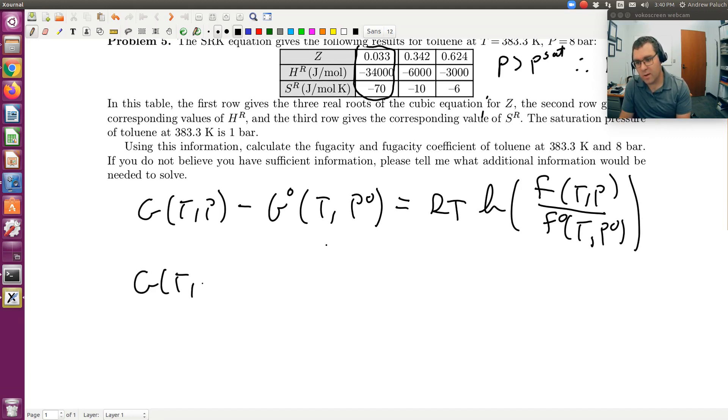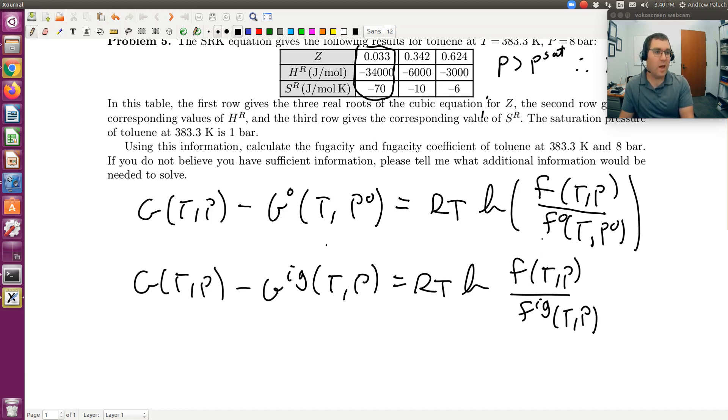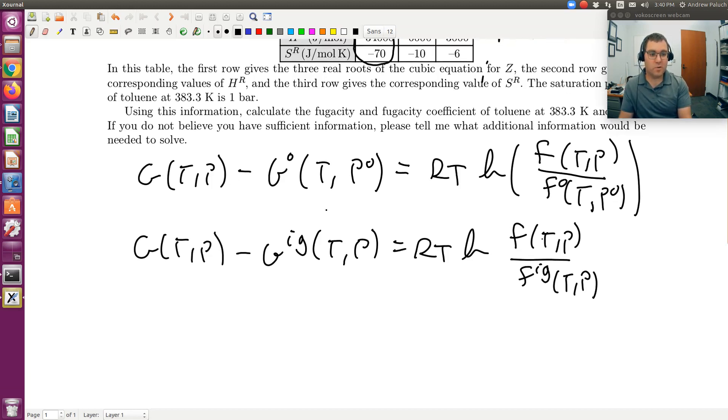Our trick that we're going to employ here is we're going to take our standard state or our reference state to be an ideal gas at the same conditions. If I do that, G at T and P minus G_IG at T and P is equal to RT log F at T and P minus F ideal gas at T and P. So basically I've just taken my reference state to be an ideal gas at the same temperature and pressure.